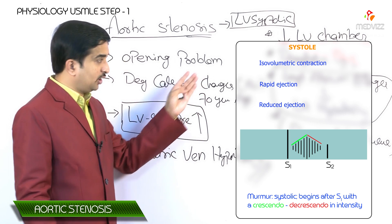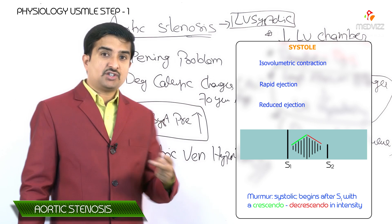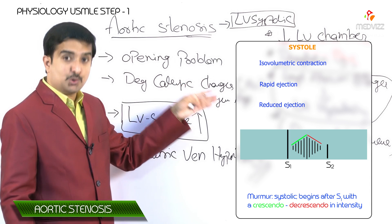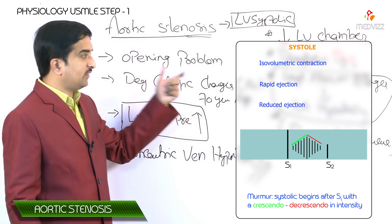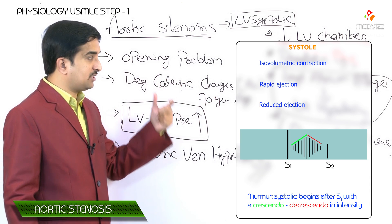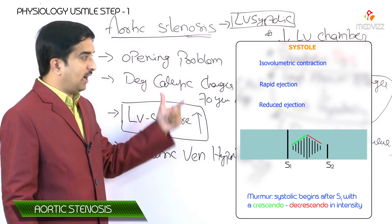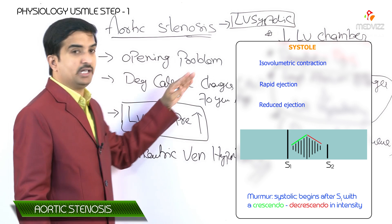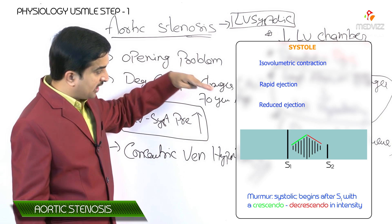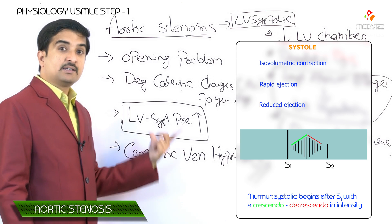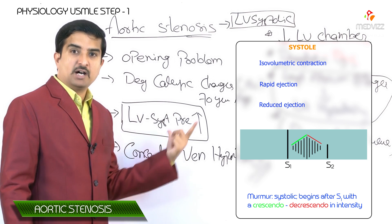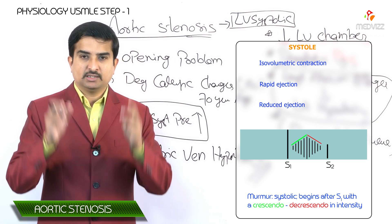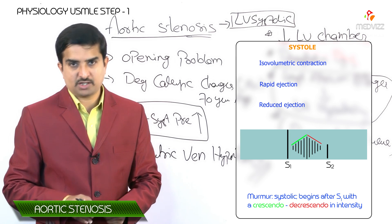The murmur is called crescendo-decrescendo because its intensity is greatest during rapid ejection phase and decreases during reduced ejection phase — as the flow and velocity of blood through the stenotic aortic valve diminishes. In rapid ejection it is crescendo in nature, and in reduced ejection it is decrescendo in nature.